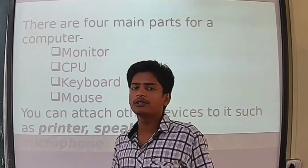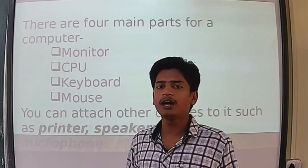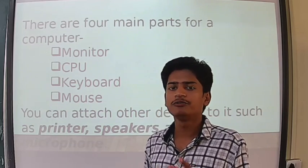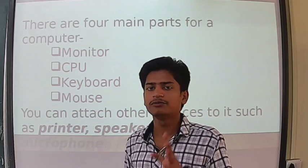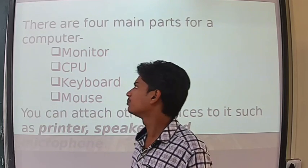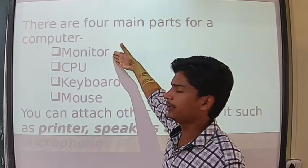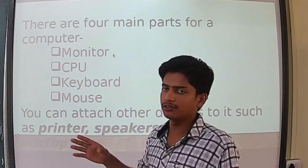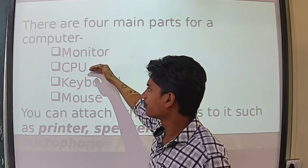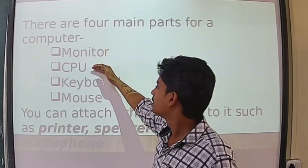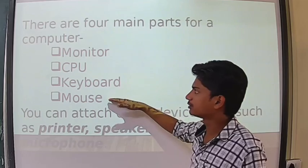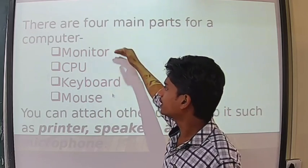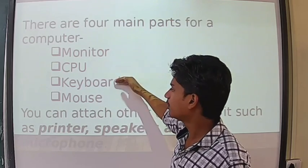Now we go to the next part: the parts of a computer. There are four main parts of a computer: monitor, CPU, keyboard, and mouse.